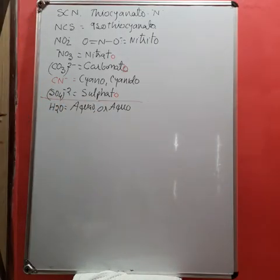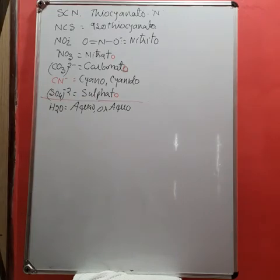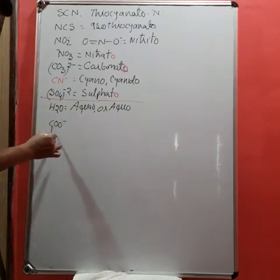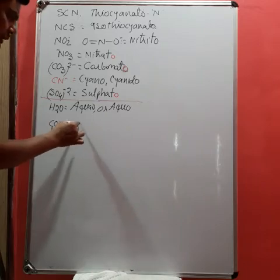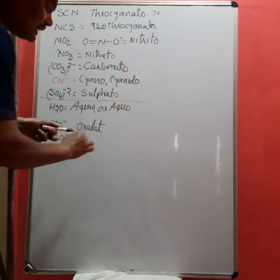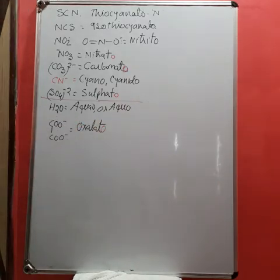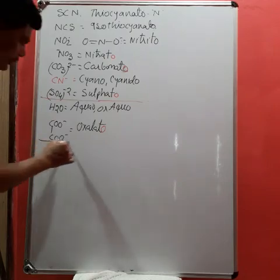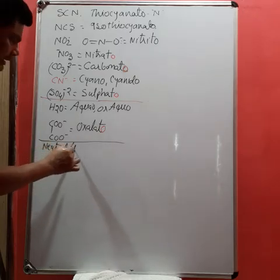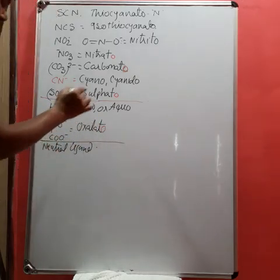H2O can be written as aqua (A-Q-U-A). Oxalate, which is COO minus and COO minus, was earlier called oxalate but as a ligand it will be written as oxalato. So some specific ligands follow this pattern. Now we also have some neutral ligands.